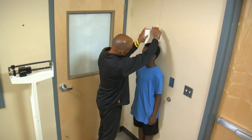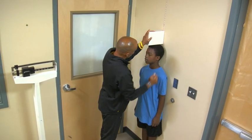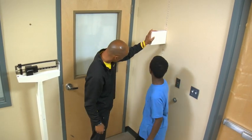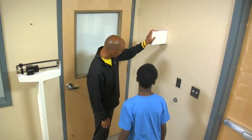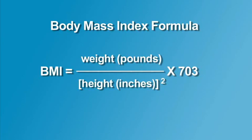Remember, both height and weight are needed to calculate BMI. These values are inserted into the BMI formula. To calculate BMI, one divides the weight in pounds by the height in inches squared and multiplies the result by a conversion factor of 703.